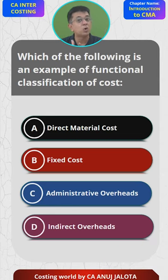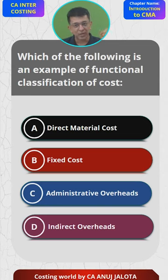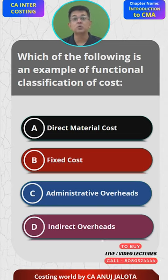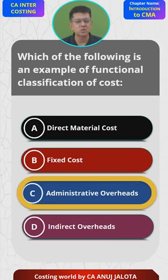Functional classification of cost will be the administrative overheads, because administration is a different function. There is always an office attached with every manufacturing company, and that office has one function - to manage the entire company. So C - administrative cost - is the correct answer. I'll see you all next time.